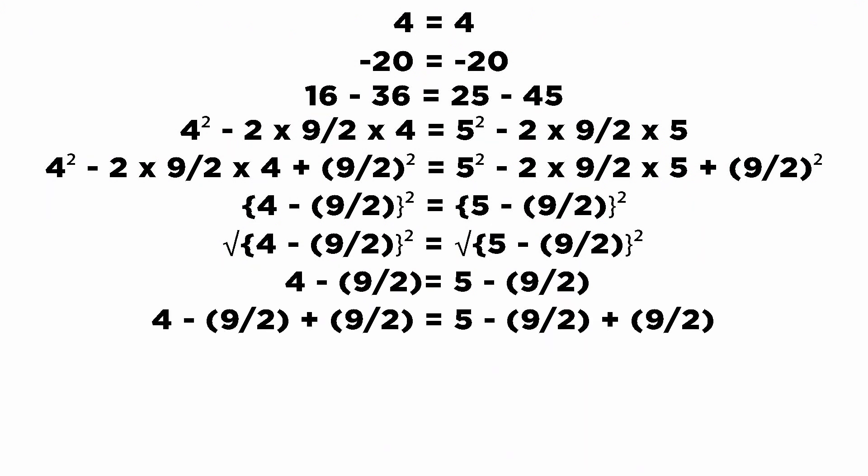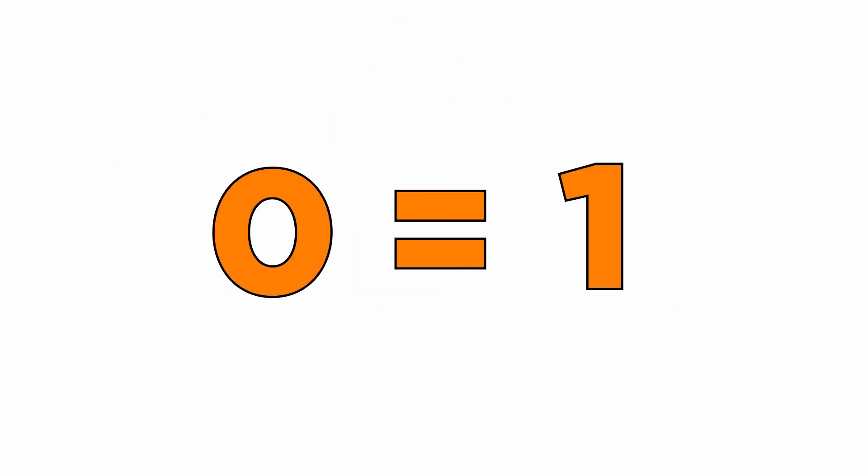And here it is, 4 is equal to 5. Similarly, 0 is equal to 1, and that's how any number will be equal to zero.